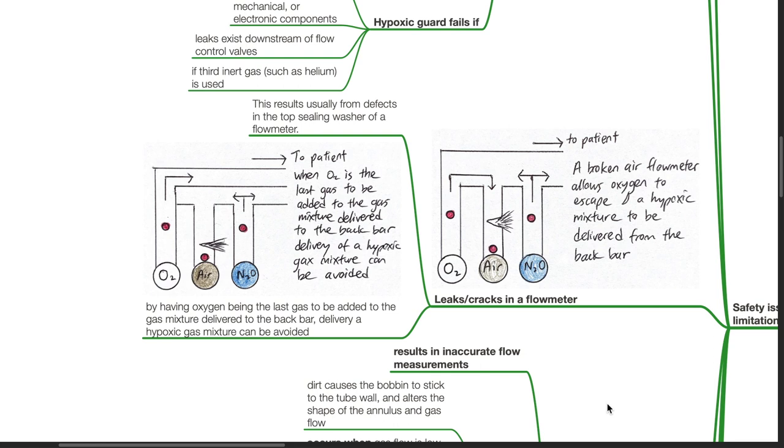Leaks or cracks in a flow meter: This results usually from defects in the top sealing washer of a flow meter. By having oxygen being the last gas to be added to the gas mixture delivered to the back bar, delivery of a hypoxic gas mixture can be avoided.